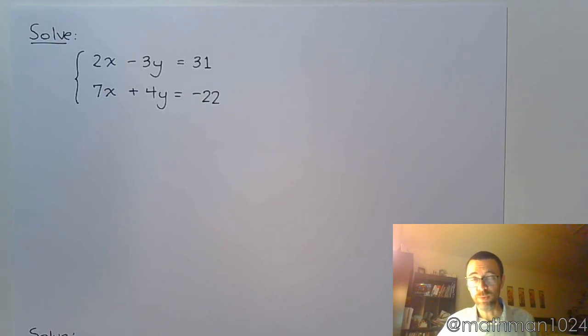Continuing on with solving systems by using the elimination method, we come across this one. In the last example we just had to multiply one equation by something so that we could get a variable to eliminate. We could do the same thing here but that would cause us to have to work with fractions and I don't want to do that.